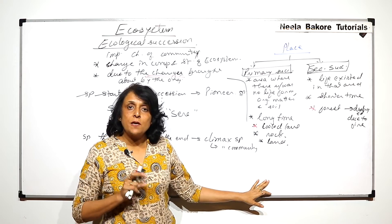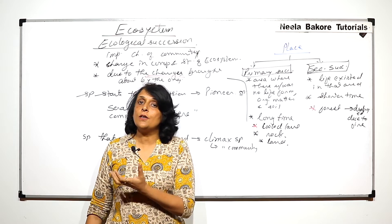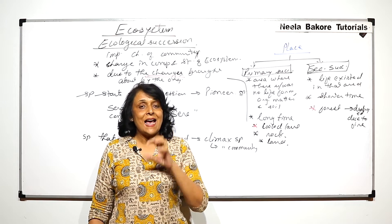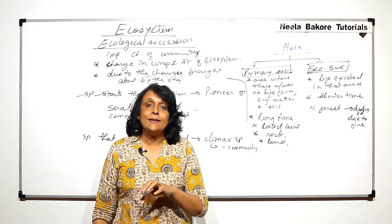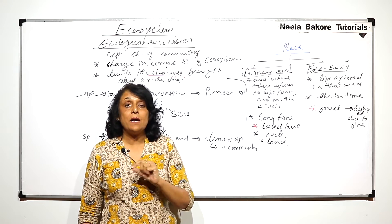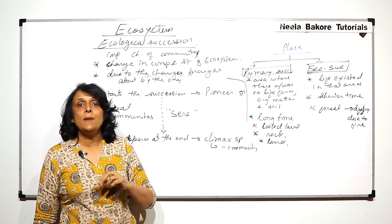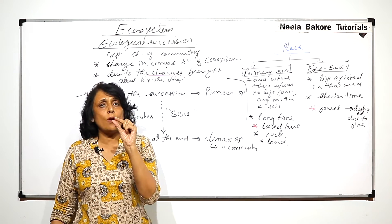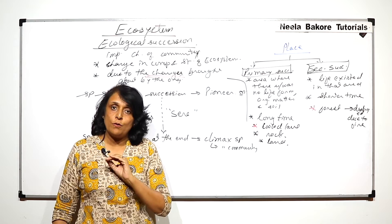Lichens establish themselves on the bare lava. When they die, their dead bodies produce organic matter. Secondly, their excretory material is acidic, and this acid corrodes the surface of the lava. So lava corrodes, organic matter gets added, and a thin soil layer is formed. Lichens brought about changes unsuitable for themselves but more suitable for the next species. A little soil is the condition bryophytes need, so lichens are replaced by bryophytes.